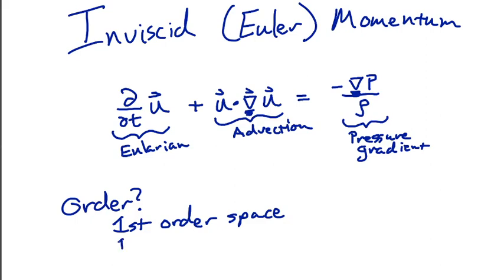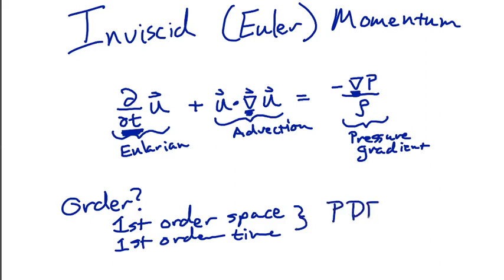A system like this is also first order in time. The reason for that again comes from counting derivatives. We look at the time derivatives — the partial derivatives with respect to time — and we see that there's just one out front: d by dt of u. So this is first order in space and first order in time. A system like this has a special name: we call them partial differential equations, or PDEs. A partial differential equation is a differential equation that has both a time dependence and a spatial dependence — one that has a dependence on more than one of the independent variables.